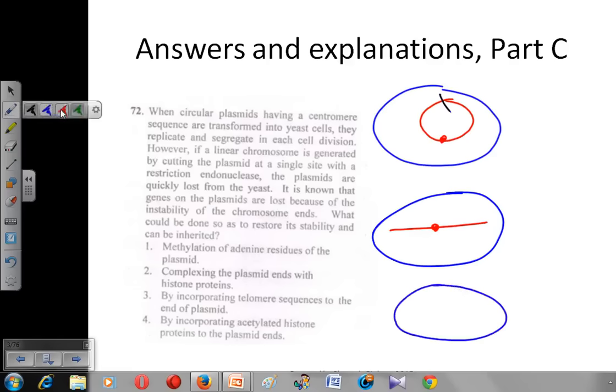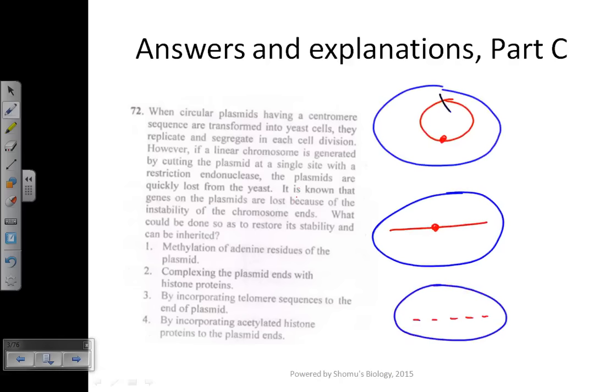The plasmids are degraded because of the instability of the chromosome ends. First, what is the chromosome end? The chromosome end is known as the telomere. A telomere is a structure that contains repetitive units of nucleotides to prevent the chromosome from degrading at the ends by exonuclease enzymes. What can we do to fix this?